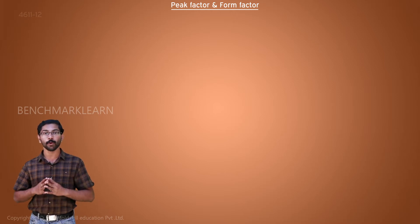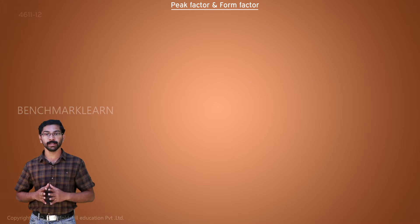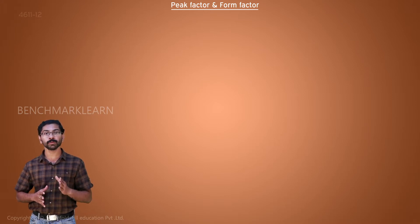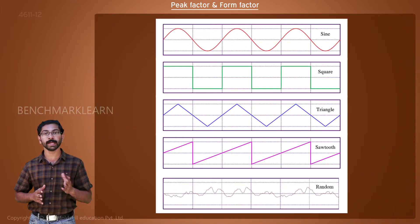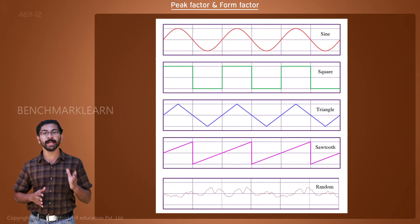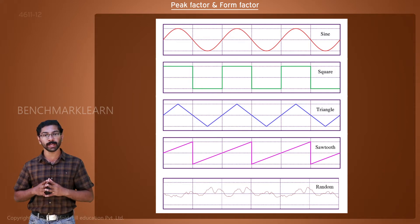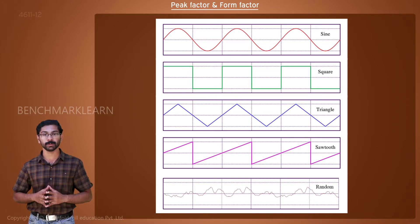Peak factor and form factor. AC stands for alternating current. Any current or voltage value that moves between two limiting values is an AC waveform. That means a square wave, a triangular wave, or even a random noise wave can be called an AC waveform. But all these different types of AC waveforms have different RMS values and average values for the same peak value of voltage.